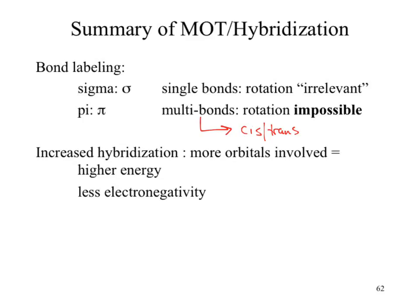The next big conclusion that is universally forgotten has to do with hybridization. The more you hybridize something, the higher energy those electrons become. Within that higher energy system, we also get less electronegative, which may seem kind of weird. Electronegativity is a property of an atom, so why is one carbon different from another carbon? The hybridization changes the arrangement of the electrons around that atom, which then changes how it interacts with other atoms.